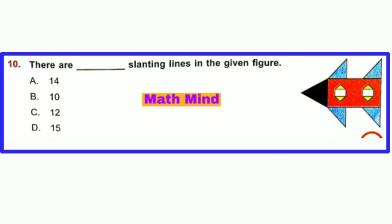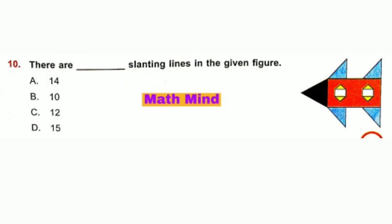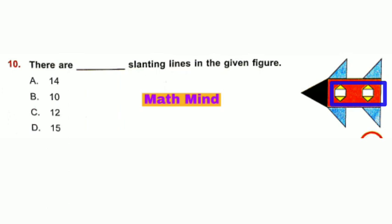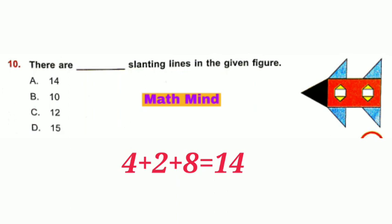Question number 10: There are how many slanting lines in the given figure? Counting the slanting lines — there is one slanting line in each such triangle. Here, 2 slanting lines; here, 4 slanting lines in each figure. Total? 8. Counting all slanting lines, there are 14 slanting lines. Option A is correct.